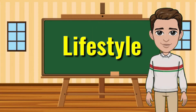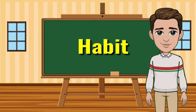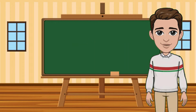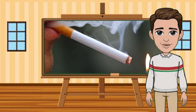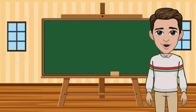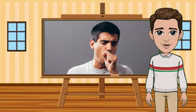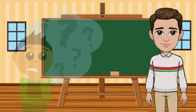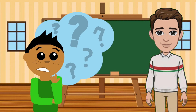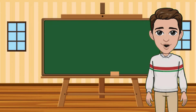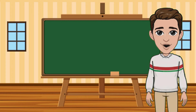Lifestyle is a way of living that includes the habits, behavior, and living conditions of a person. Lifestyle conditions like cigarette smoking can be harmful to health and might cause serious respiratory and circulatory health problems. What are other habits or lifestyle conditions that can affect these two important organ systems? Let us find out.